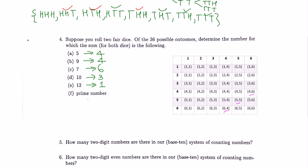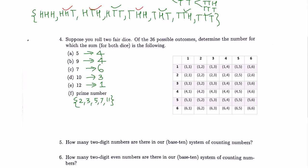How many ways can we get a prime number sum? Prime numbers possible with two dice are: 2, 3, 5, 7, and 11. To get a sum of 2: only (1,1) — so there is only one way to get a sum of 2.